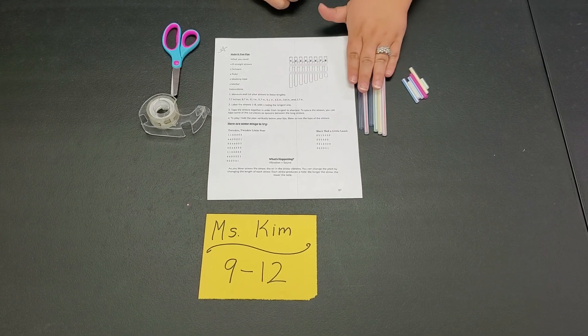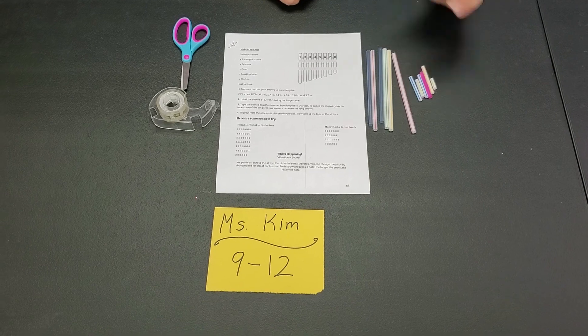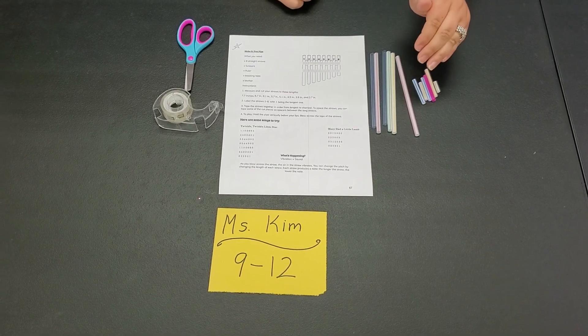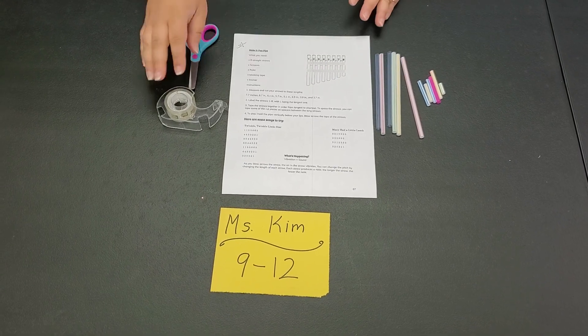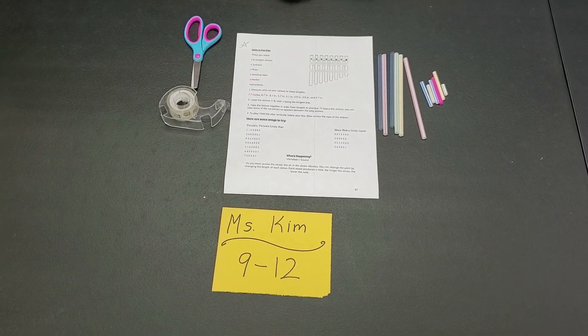So you're also going to have straws and straw pieces. And you're going to cut the straws and use the straw pieces in between with your tape. And this is what it will look like.